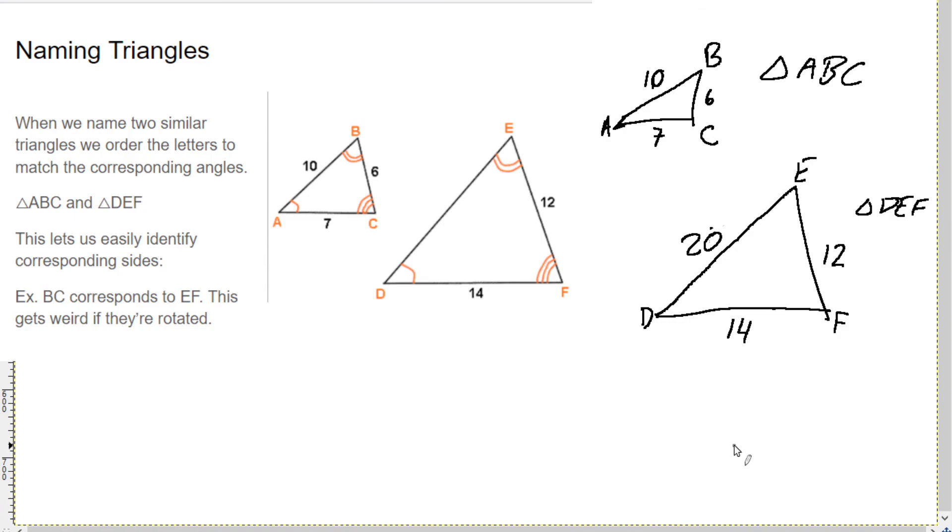This gets a little weird when one of these gets rotated. So if we erase this. And let's draw this one, but in a different orientation. So let's say we put D over here. E over here and F over here. We can't just choose the closest side. Like A can't be E. We want to write this so the corresponding sides match up already. Or still, sorry. So if we have 14, we have 20. This one was with 12.